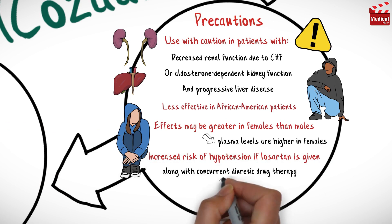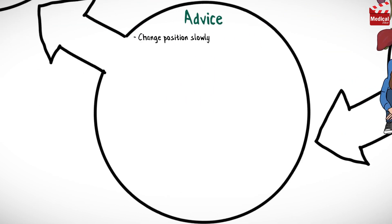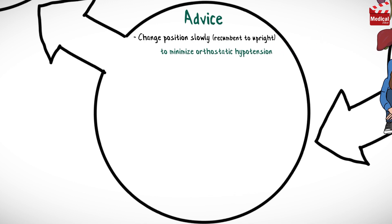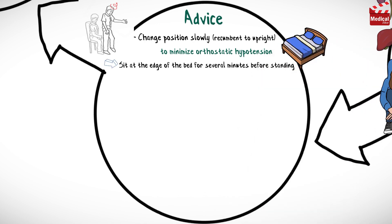Under such circumstances, the initial dose shouldn't exceed 25 mg per day. Advise patient to change position slowly, in particular from recumbent to upright, to minimize orthostatic hypotension. Sit at the edge of the bed for several minutes before standing, and lie down if feeling faint or dizzy.